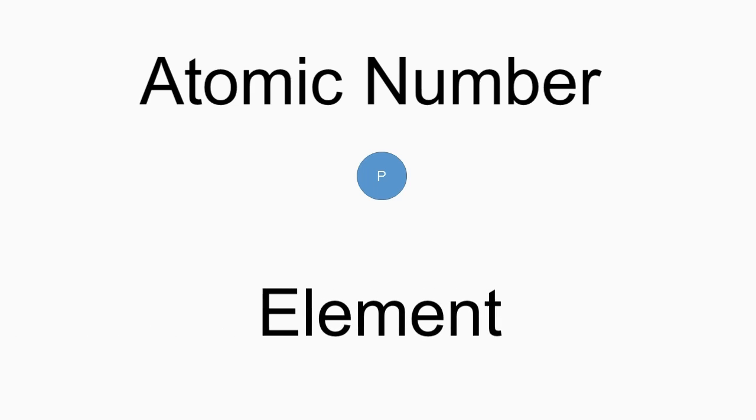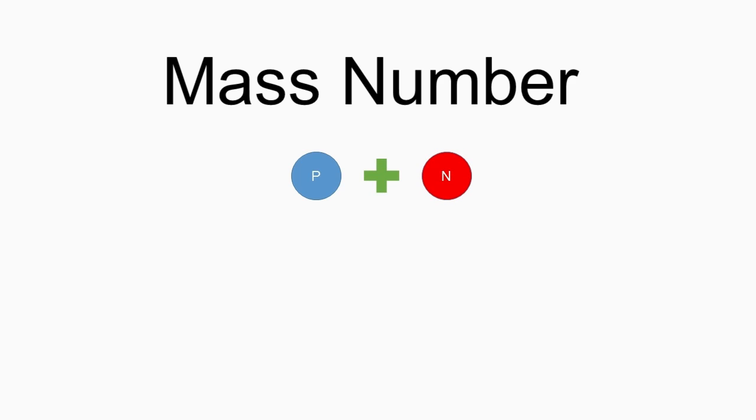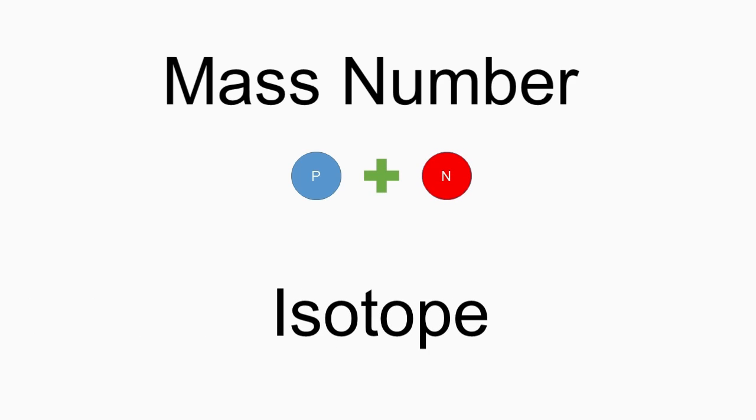The problem is that we immediately hit a problem when trying to answer that question, because an element could be rarer than itself. Let me give you an example. But before that, let's discuss a few basics about the atom. An atom is made up of protons, neutrons, and electrons. There is something called the atomic number of an atom, and that's the number of protons it has — that determines what element you get. Then there is the mass number, which is the number of protons and neutrons an atom has, and that determines what isotope you get. That isotope is what could make an element rarer than itself.